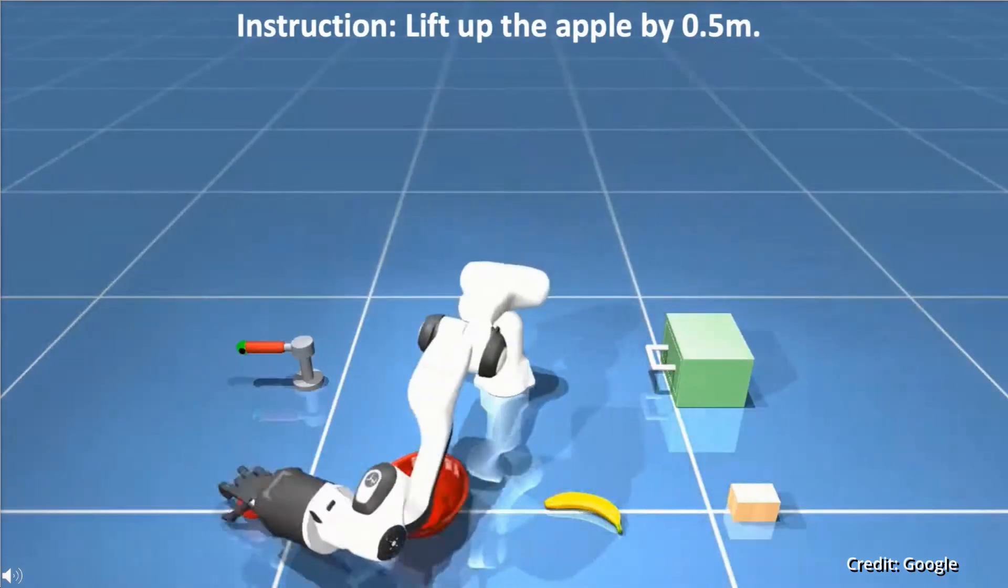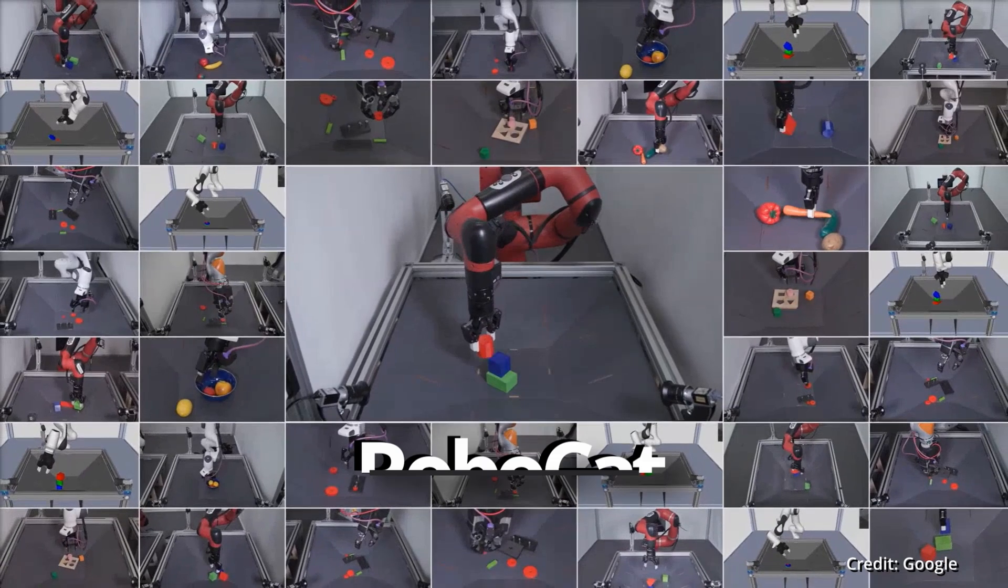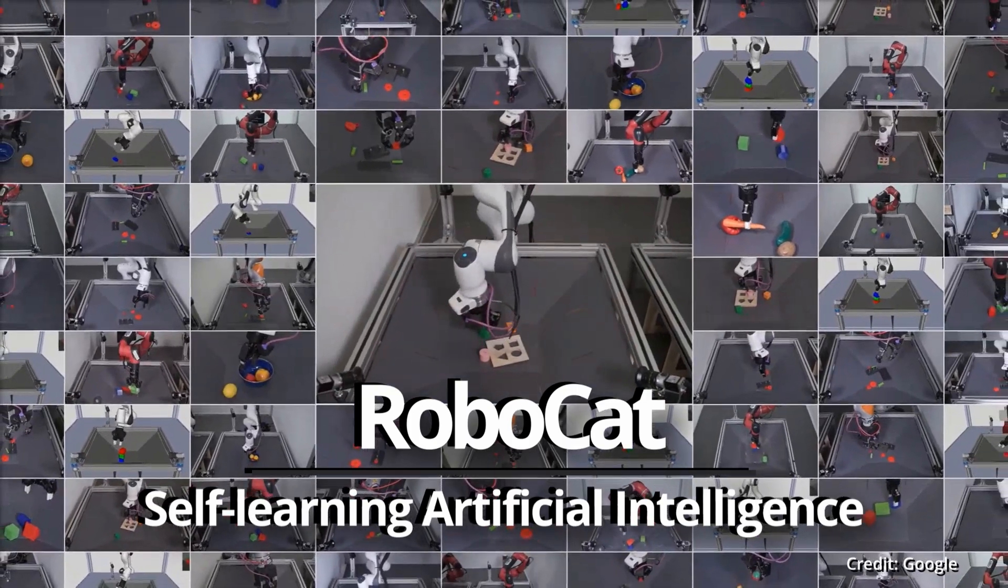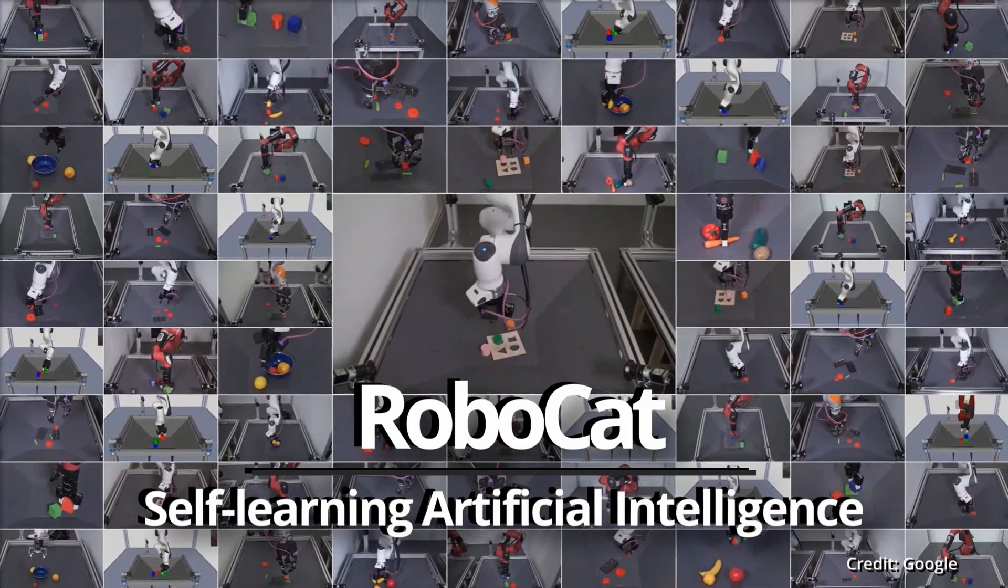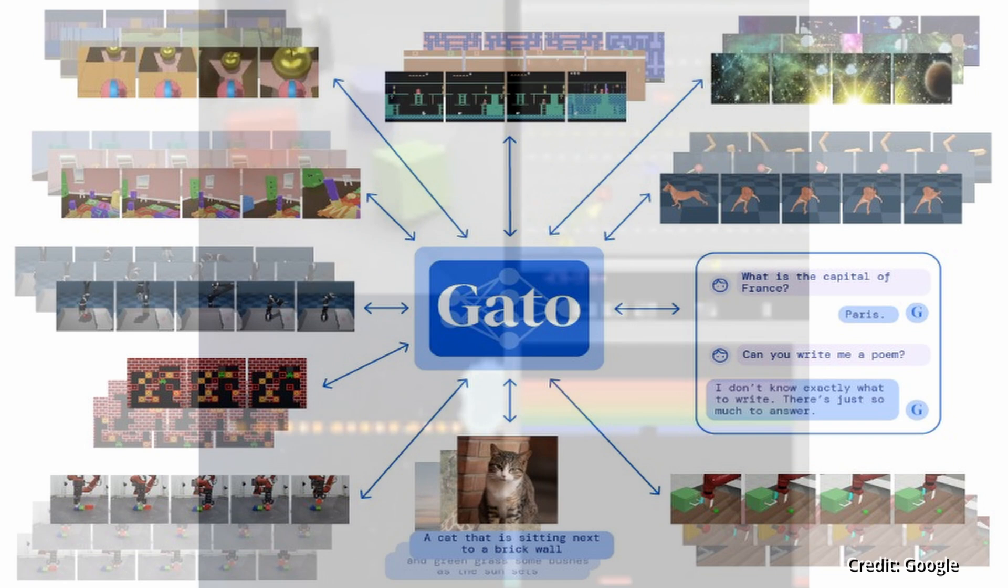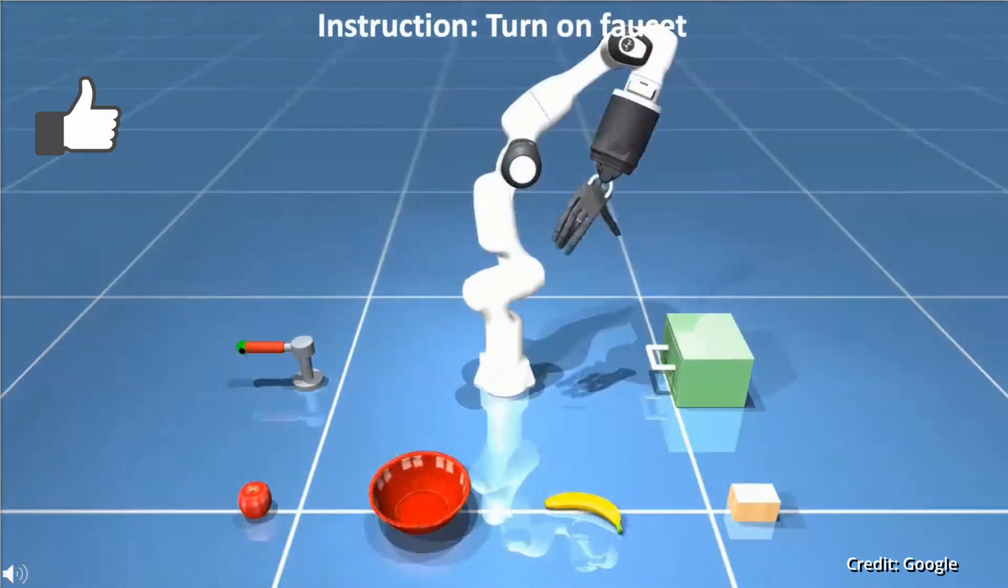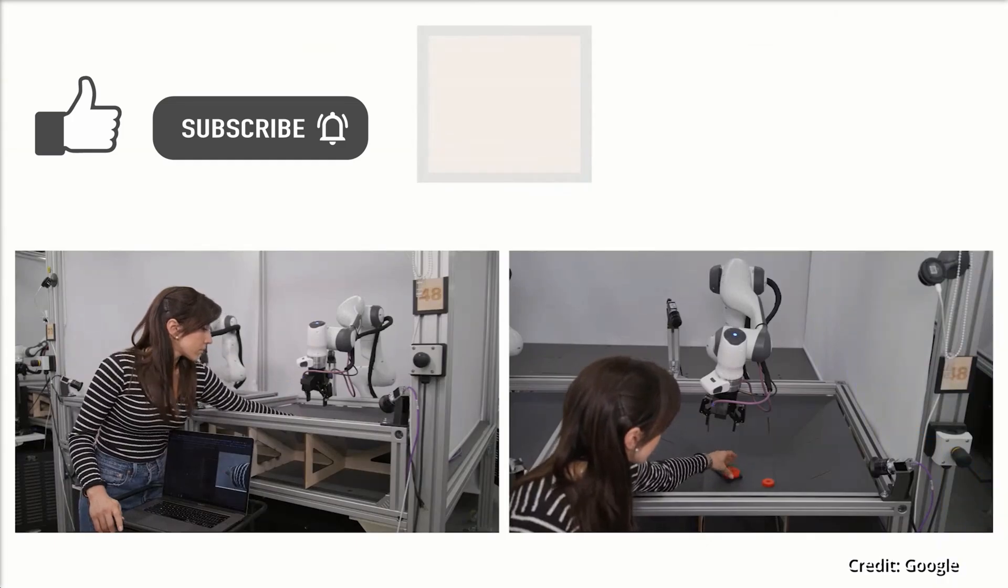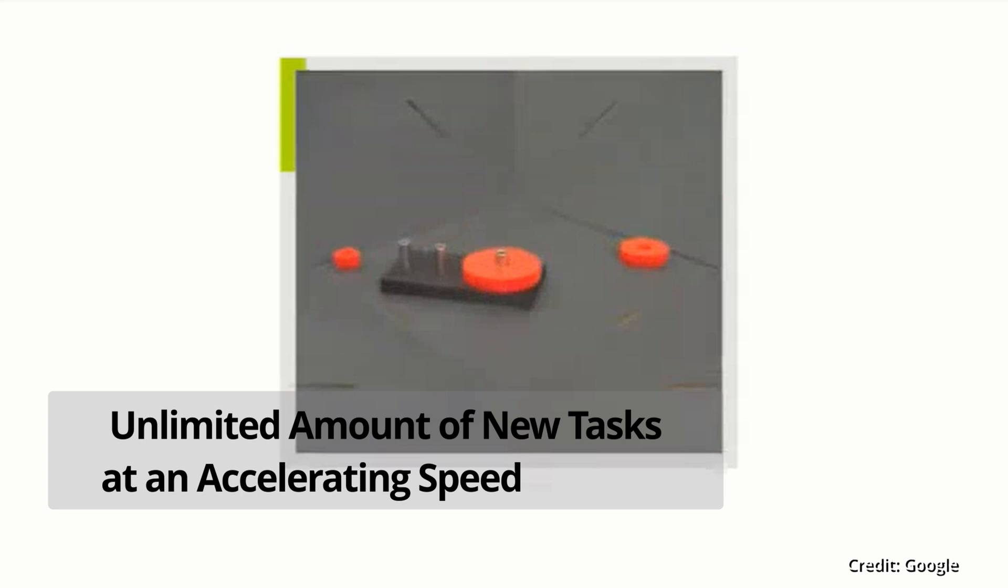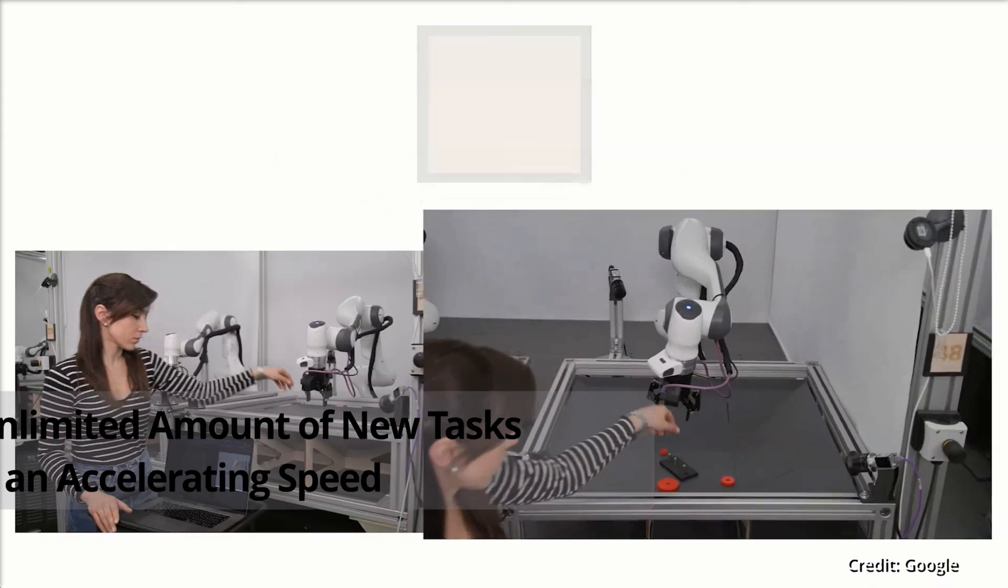In a massive breakthrough, Google has just unveiled its new AI model called RoboCat as the world's most advanced self-learning artificial intelligence ever, based on DeepMind's generalist AI called Gato, which can do over 600 tasks, revolutionizing RoboCat's intelligence with its ability to learn a potentially unlimited amount of new tasks at an accelerating speed.